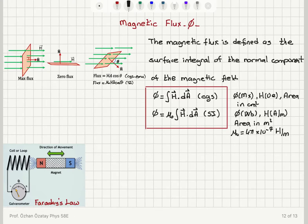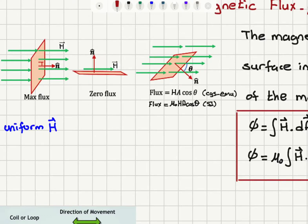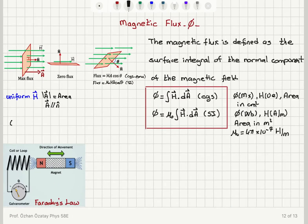If you have a uniform magnetic field, the area vector points parallel to the normal vector. The area vector has magnitude equal to the area and its direction is parallel to n-hat. If you take the dot product between the area vector and a uniform H — which comes out of the integral — you get the maximum flux, which is H times A: the field strength multiplied by the area, in CGS units.